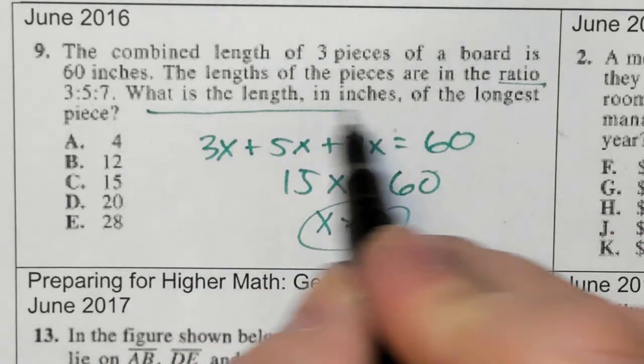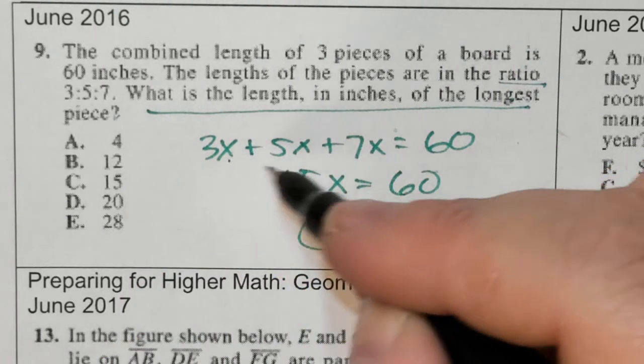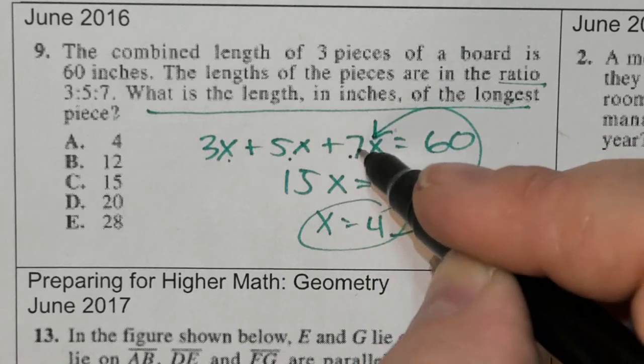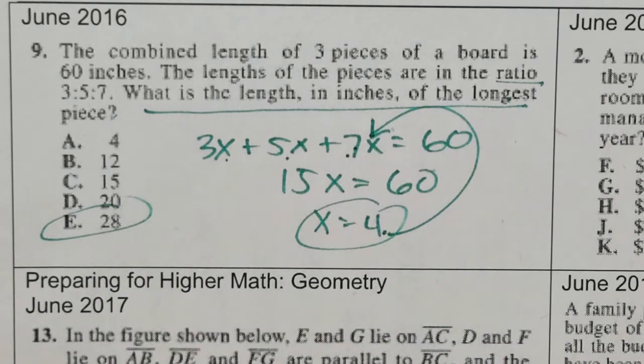Now answer the question: what is the longest piece? Of these proportions, 7 is the longest. 7 times 4 is 28.